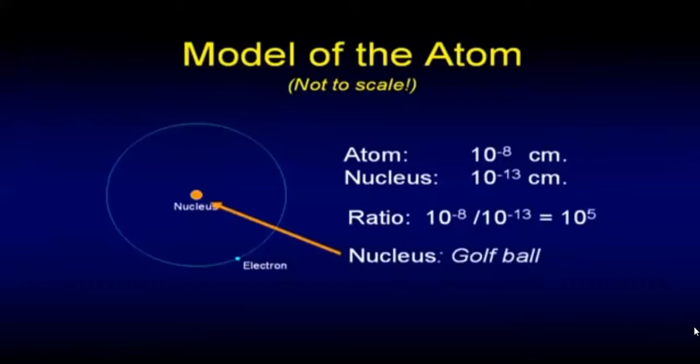If I make the nucleus a golf ball, the electron is actually three miles away. So if we were going to build a model, we have an ambitious project. If we make the nucleus as big as a golf ball, our electron has to be three miles away. That's just the linear distance.